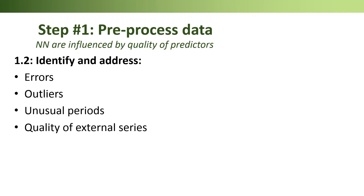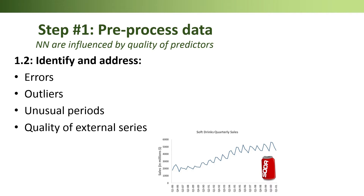Aside from detecting patterns, it's important to identify and handle unusual patterns, such as outliers and unusual periods. Otherwise, the neural network might try to learn those patterns as part of the systematic component of the series. For example, in our quarterly soft drink sales example, notice there's an unusual year at the beginning — we should probably not include that first period in the data given to the neural network.